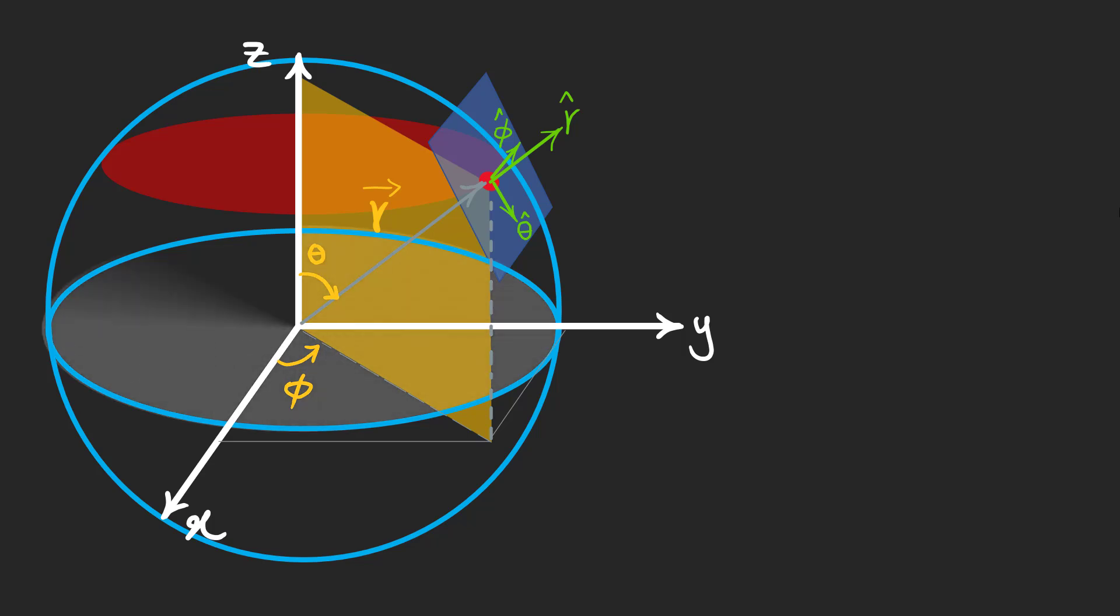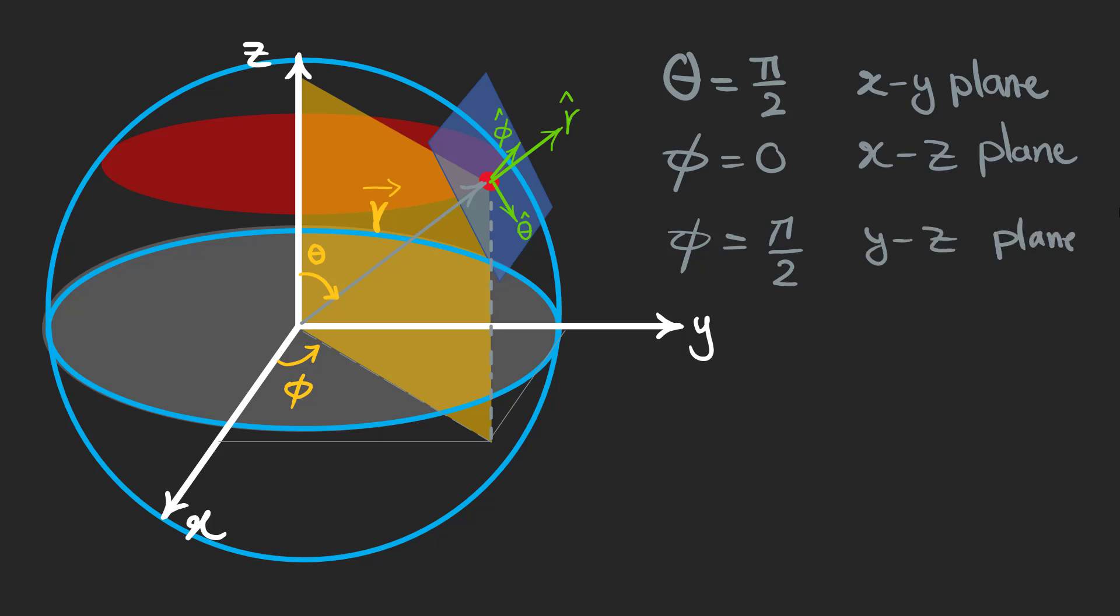Pay attention that if theta is pi over two or 90 degrees, we're talking about the xy plane. If phi is zero, we are on the xz plane. And when phi is 90 degrees, we are talking about the yz plane.